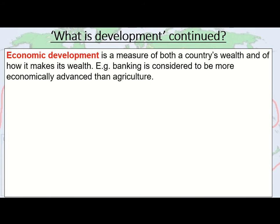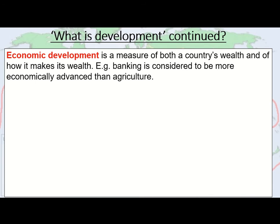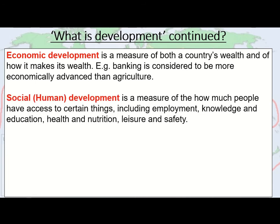The UK has a very big banking sector and is relatively wealthy income-wise, so we are considered far more economically developed than countries that rely on agriculture as their main source of industry. Social — sometimes called human — development is how we measure people's access to things like jobs through education or job centres, their knowledge and education, how healthy they are, their level of nutrition, whether they have access to adequate calories, leisure facilities, and whether they are safe. These are all human development factors. It's no good being a wealthy country if no one can read and write — you need to balance development across both factors.